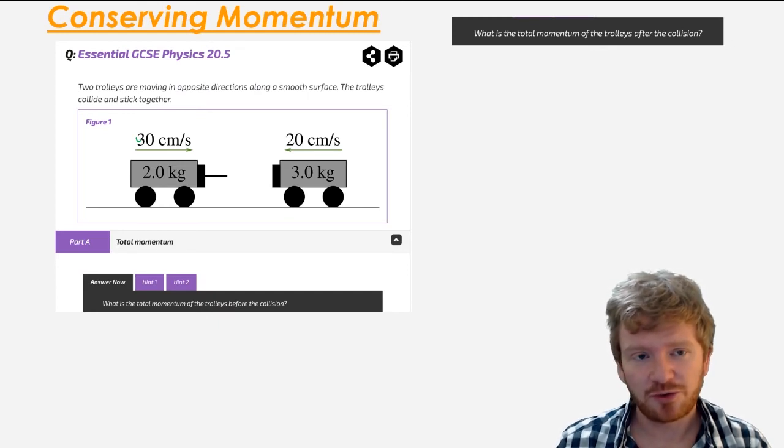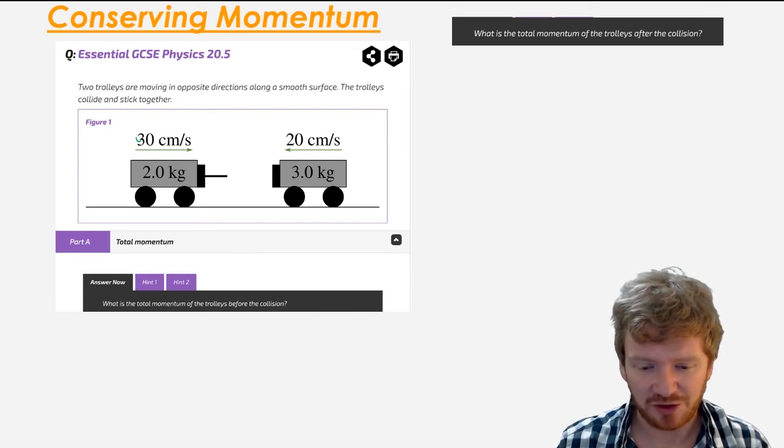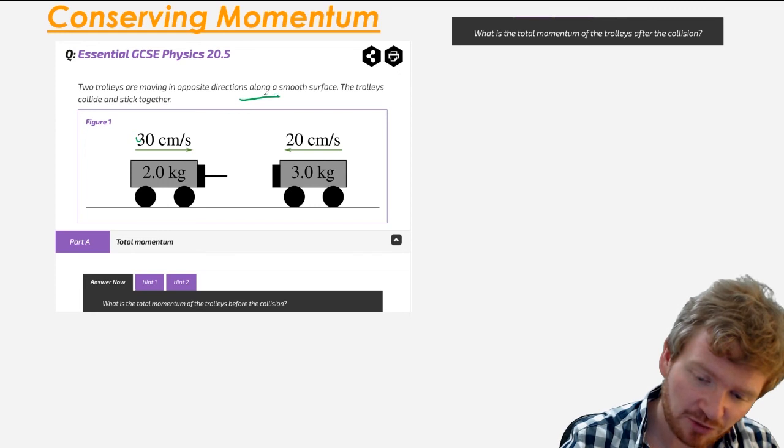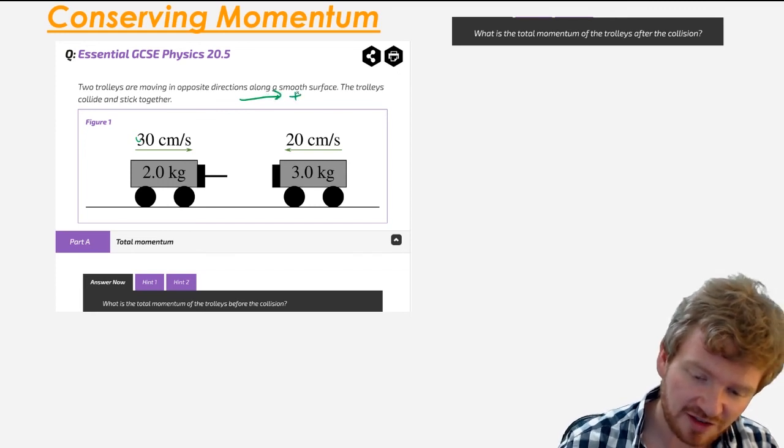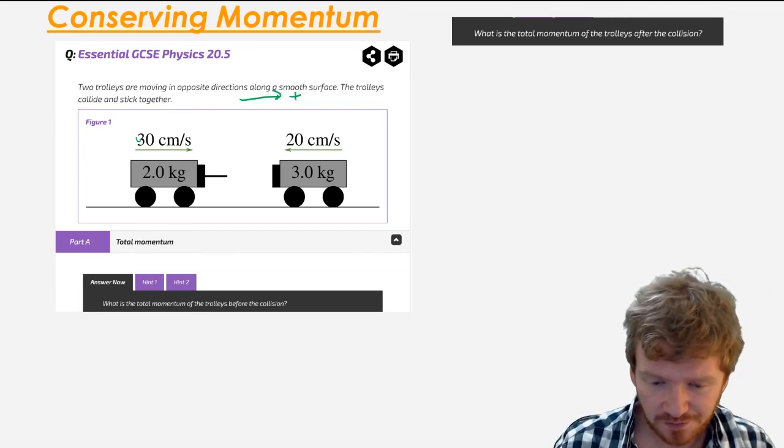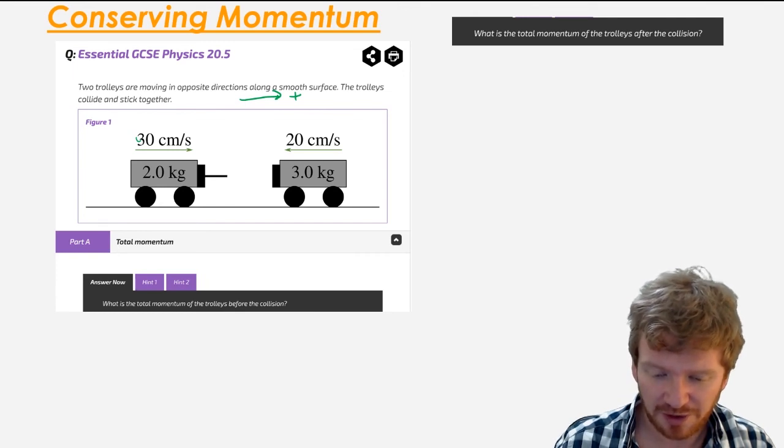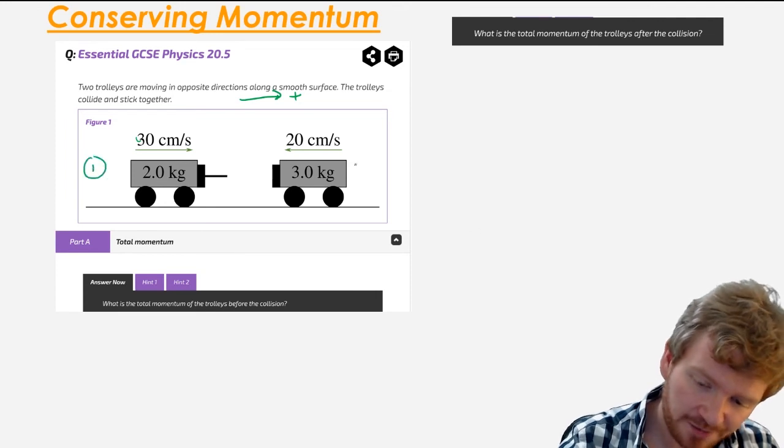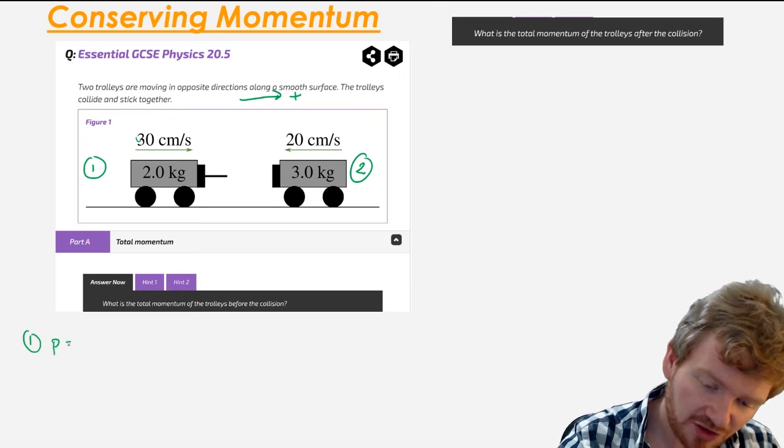One more question I'd like you to just go through is conserving momentum because this is another classic question where you might be asked to have a look at it. You've got two trolleys. They're moving in opposite directions. The first thing I'm going to do, because I'm moving in opposite directions, the momentum's a vector. I'm going to say that to the right is positive. And I'm asked for the total momentum of the trolleys before the collision. So I'm going to label this trolley one and trolley two.